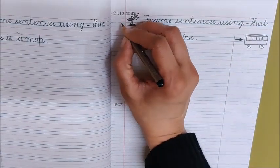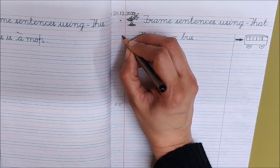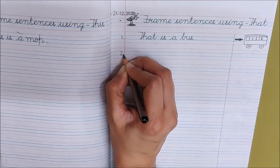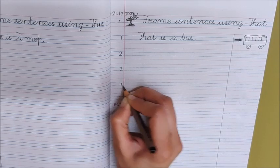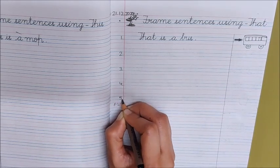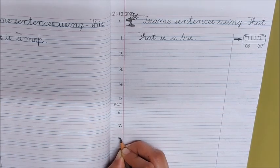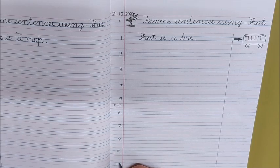Now children below the date put a dot. And then write down 1 dot, 2 dot, 3 dot, 4 dot, 5 dot, 6 dot, 7 dot, 8 dot, 9 dot, 10 dot.